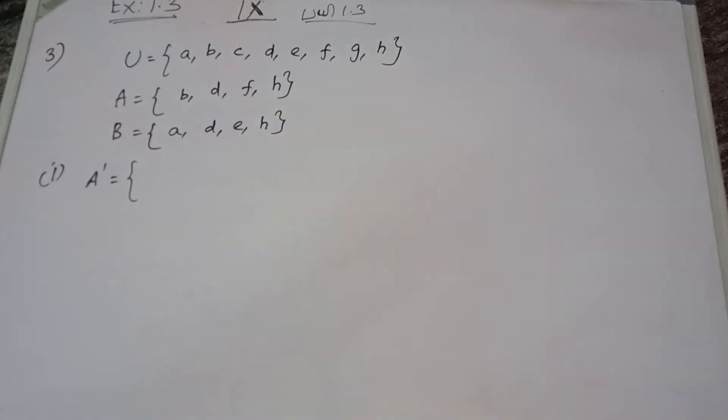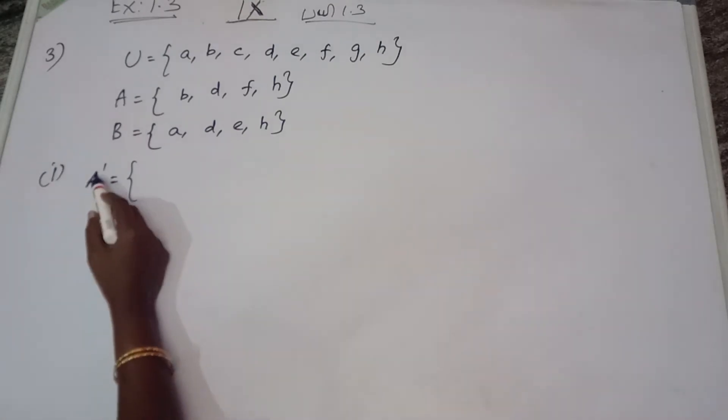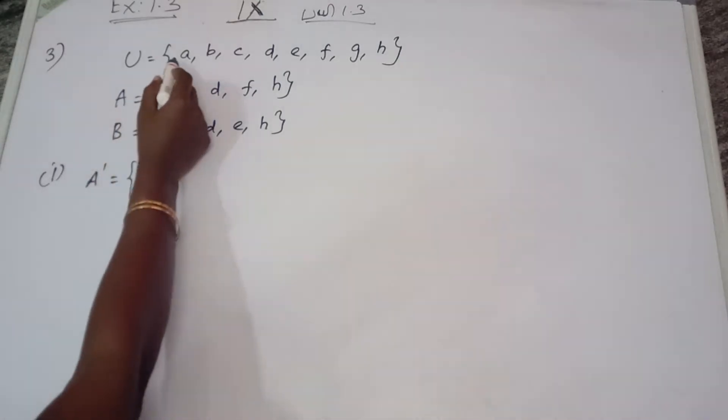For complement, we should have the universal set. For that only they have given the universal set. So A dash — how to find A dash? A dash is the complement of A.